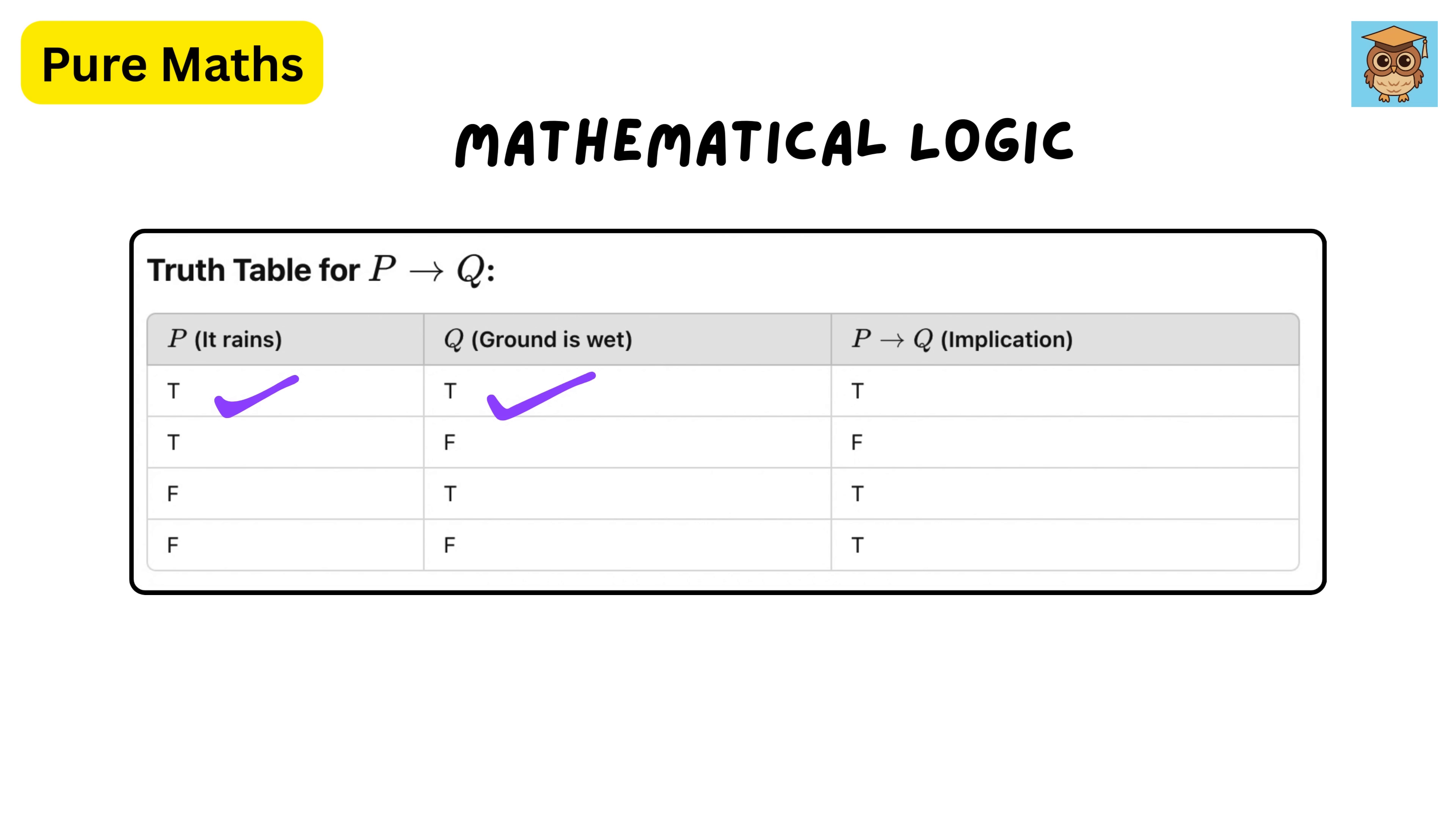If it rains and the ground is wet, then p implies q is true. If it rains but the ground is not wet, then p implies q is false. If it does not rain but the ground is still wet for some other reason, then p implies q is still true.